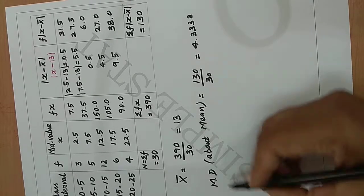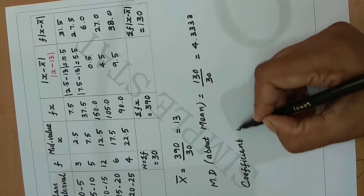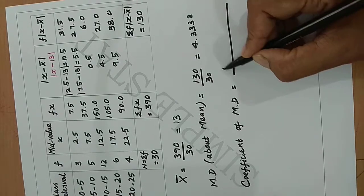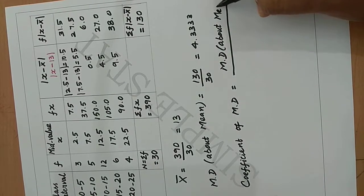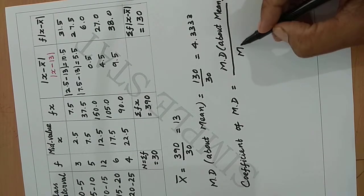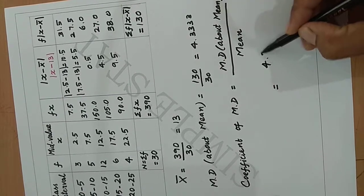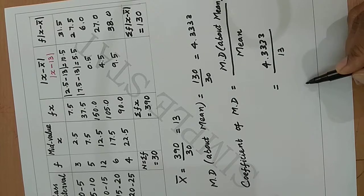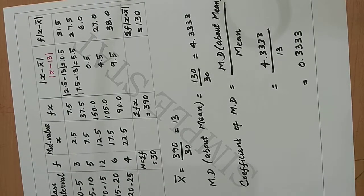The coefficient of mean deviation is given by: coefficient of mean deviation = mean deviation about mean / mean value. We have mean deviation about mean = 4.3333, divided by mean = 13. Therefore, the coefficient of mean deviation = 0.3333.